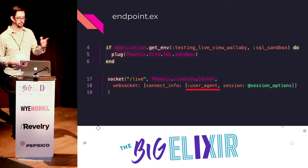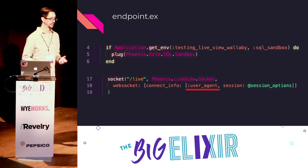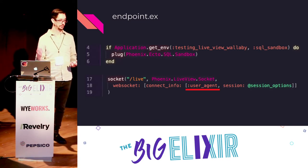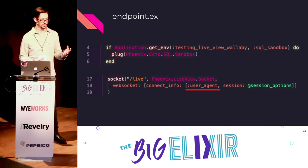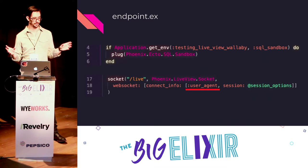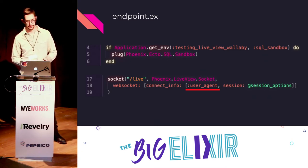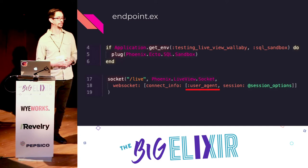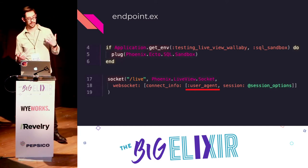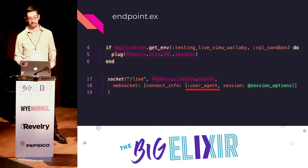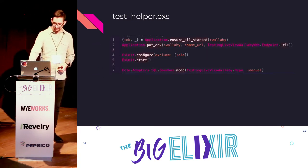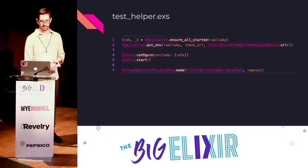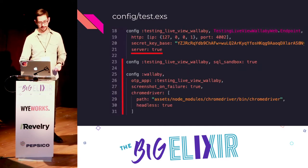From there, we modify the endpoint and add the SQL sandbox plug. What that does is help your tests route different requests to a specific transaction that's running, so all of your tests have database layer isolation from each other and can be run concurrently — this tells Phoenix to do that. Another key piece missing from the documentation right now is that in the socket you need the user agent, because the user agent is how Wallaby communicates to the rest of your application to link up the database connection and the browser, making sure you're not getting back an empty database every time you connect.